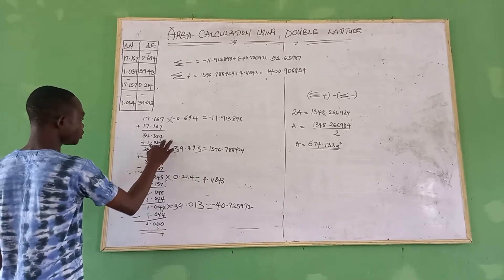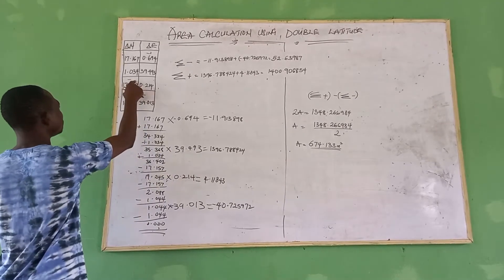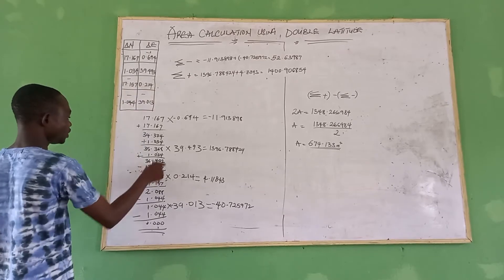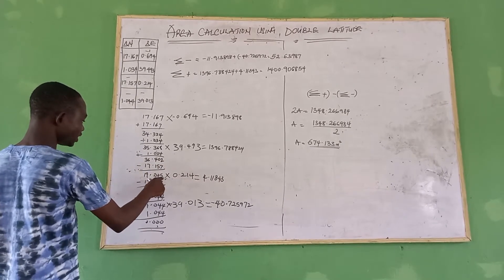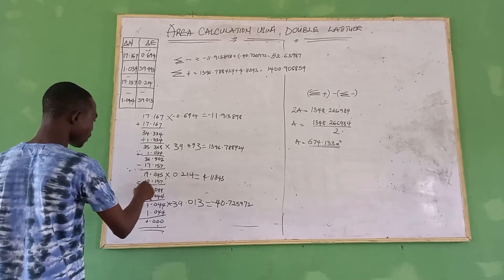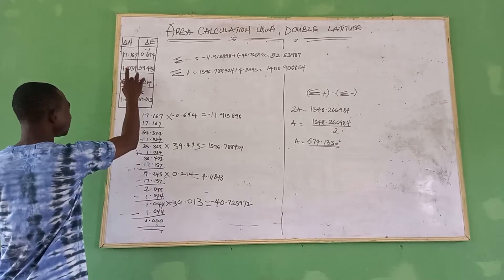So since this one has appeared two times, you come to the next box. You have minus 17.157 here. So the addition of these two is going to give us this value, 19.245.